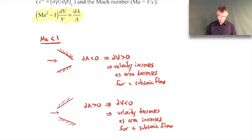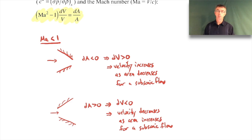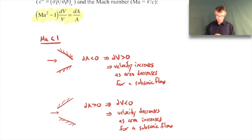If dA is zero, that corresponds to an inflection point - basically the area isn't changing, like a straight section of pipe. If dA is zero then the only way that works is if dV is zero, meaning the velocity doesn't change. So in a straight section of pipe, the velocity just remains constant.